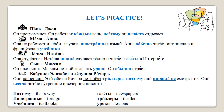Also notice the usage of the negative 'never' — никогда — which is followed by the negative particle не. We use double negatives in Russian. So when using the word 'never,' always remember to have не in front of the verb as well: никогда не. Не любят here can work as 'don't love' or 'really don't like.'